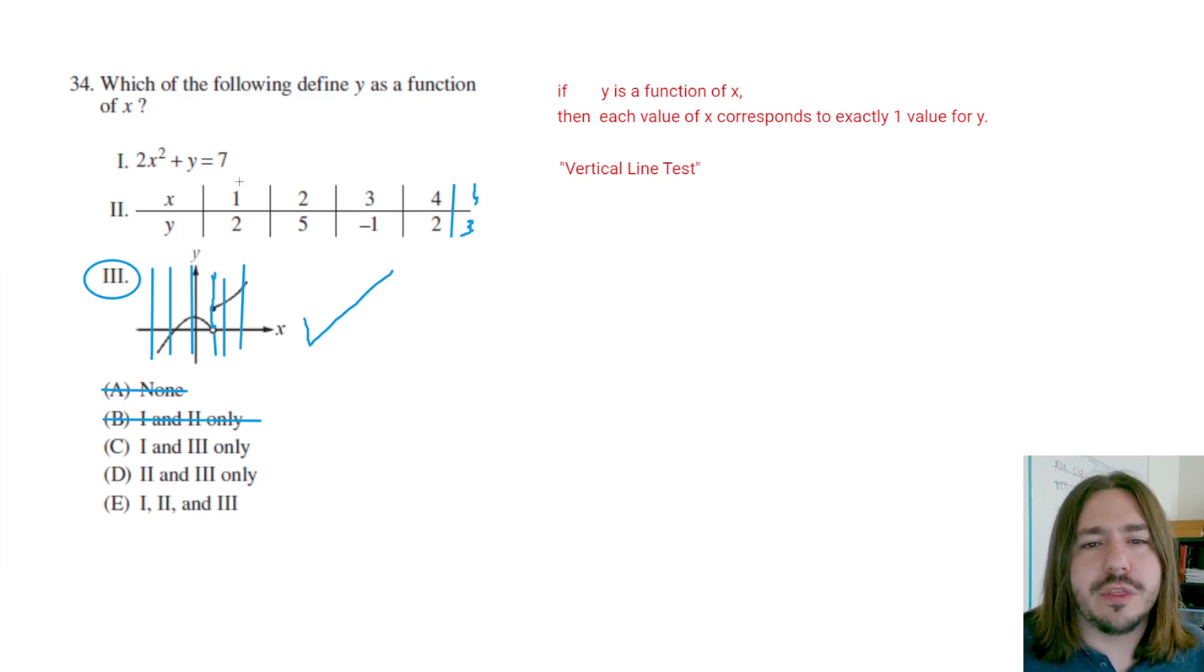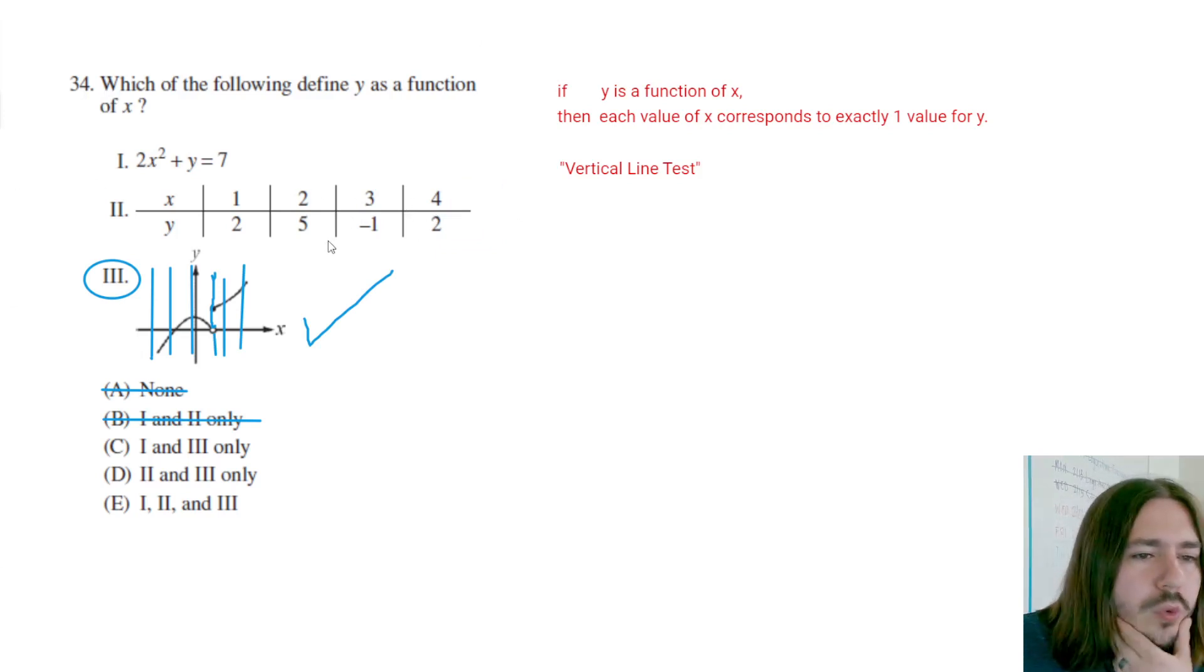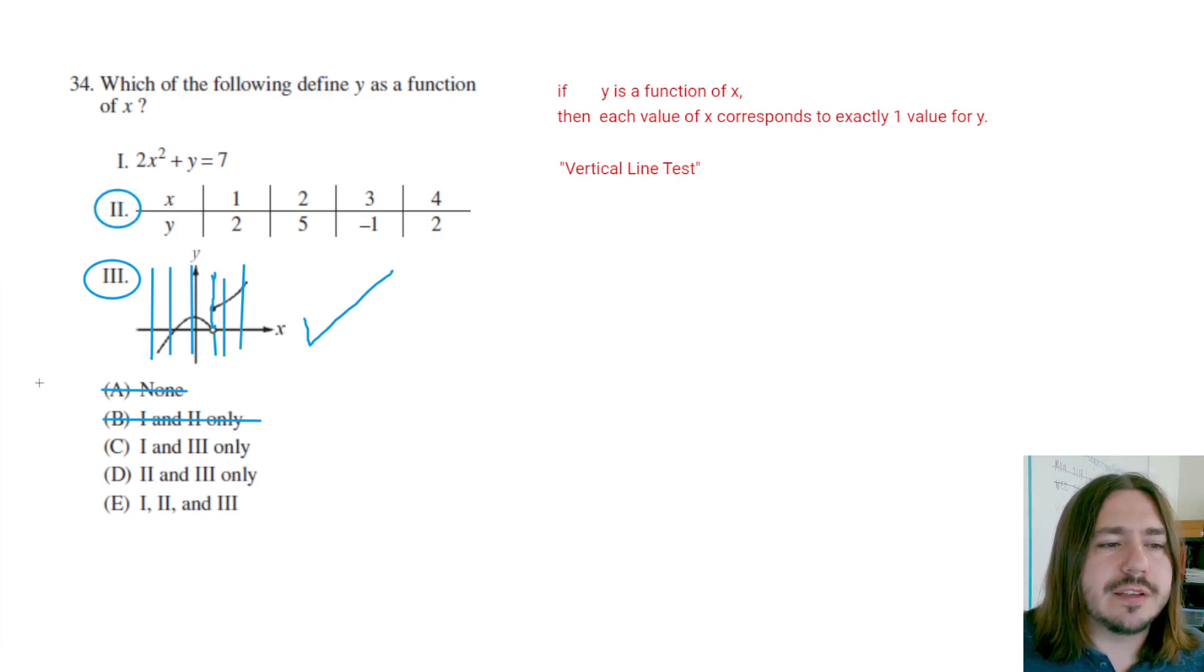Let's just say there was an extra entry here that was one, three. That would no longer be a function because then we'd have this x value one that'd be corresponding to two different y values, two and three. That would prevent it from being labeled as a function. But since we do not have that, each x value is only represented once. There's no repeating x values up here with different y values, then we can go ahead and say, yep, two, that is a function as well.